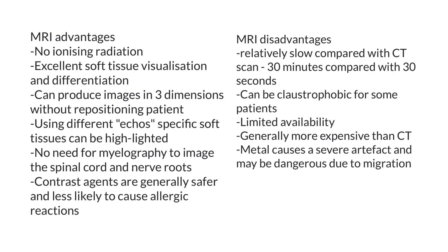With respect to the MRI, there are several advantages. The big ones are that there's no ionizing radiation and it's really good for soft tissue differentiation. You can produce images in three dimensions at one time so you don't have to reposition the patient, although this advantage is relatively minor because with CT we can create images which are half a millimeter in any dimension — so half millimeter cubes — so that we can actually reconstruct them in three dimensions without repositioning the patient.